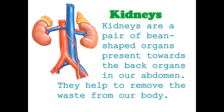Kidneys: kidneys are a pair of bean-shaped organs present towards the back of our abdomen. They help to remove waste from our body. You can ask your mother to show you rajma beans — our kidney looks just like that. The kidneys are towards our back in the abdomen, and they help remove the unwanted things that are not required in our body.